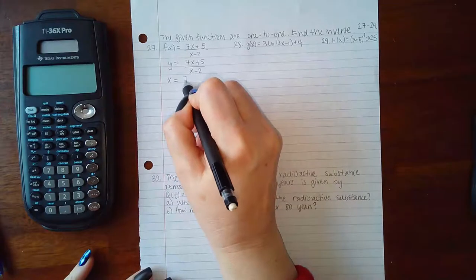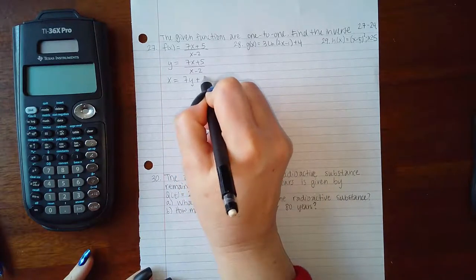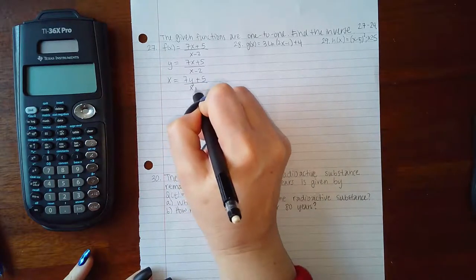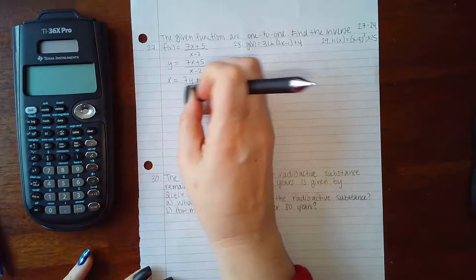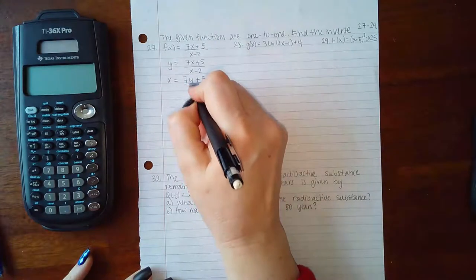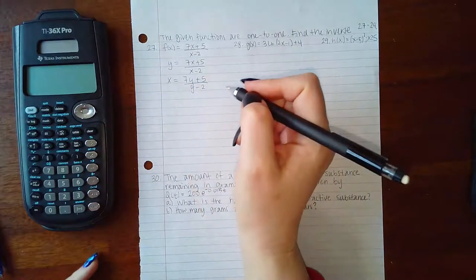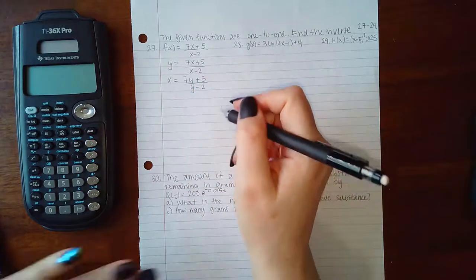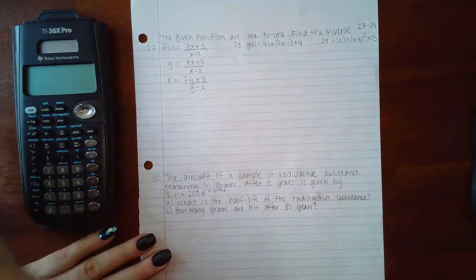So the y becomes an x and all the x's become y's. Then the next step, which is the harder step, is to solve for y, so isolate y.